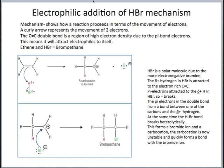Let's now look at the mechanism of electrophilic addition of hydrogen bromide. The mechanism shows the reaction in terms of the movement of electrons, and curly arrows represent the movement of two electrons. In alkenes, the double bond is a region of high electron density because of the pi bond electrons, which means alkenes attract electrophiles at this double bond.